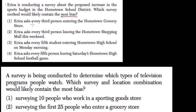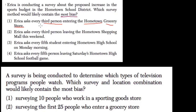This first one is pretty good — you ask every third person entering the hometown grocery store. However, the people entering the grocery store, depending on what time of day you go or what types of grocery items the store sells, will only represent certain people. If the items are very expensive, only the very wealthy will shop there. But this is not that bad because they're asking every third person, and it's just a grocery store after all. So it is biased, but it doesn't seem so terrible.